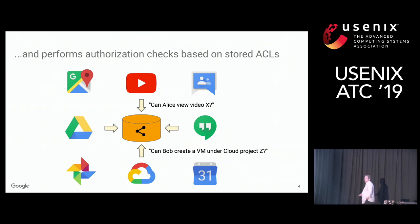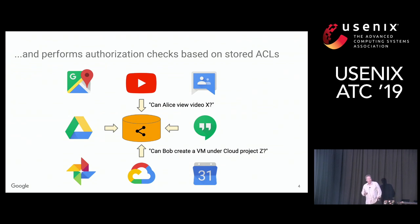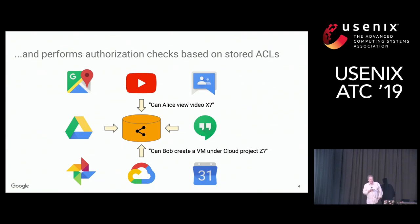Another example: the Google Cloud platform may store in Zanzibar a permission that says Group Y manages Cloud Project Z. The second purpose is to perform authorization checks based on those stored permissions — for example, can Alice view video X, or can Bob create a virtual machine under Cloud Project Z?